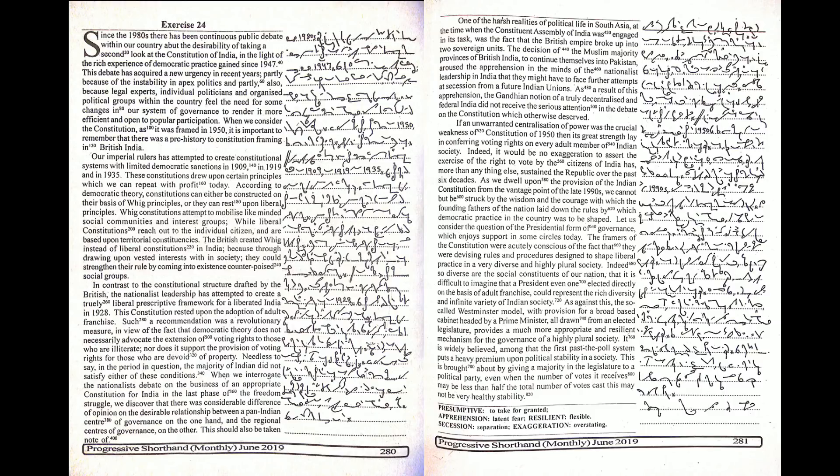As against this, the so-called Westminster model with provision for a broad-based cabinet headed by a prime minister all drawn from an elected legislature provides a much more appropriate and resilient mechanism for the governance of a highly plural society. It is widely believed that the first past the poll system puts a heavy premium upon political stability in a society.